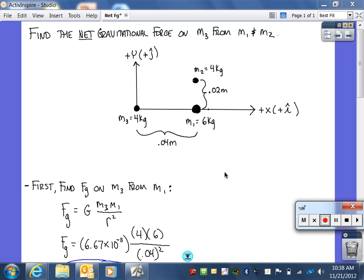The first thing we will do to get the net gravitational force on M3 is to find out how hard just M1 pulls on M3. Using Newton's Law of Universal Gravitation applied to these two masses, FG equals GM3M1 divided by R squared. Plugging in, we have G, the universal gravitational constant, which is 6.67 times 10 to the negative 11th, M3 is 4, M1 is 6, and R is 0.04 squared.